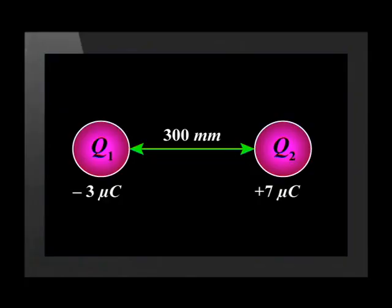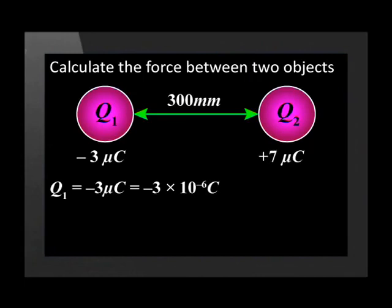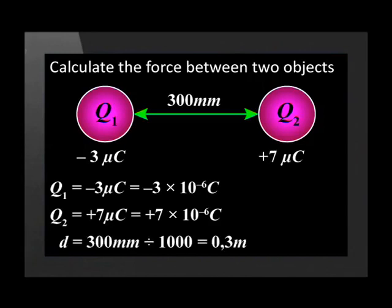Let us try a question involving a calculation based on the Coulomb's law equation. Calculate the force acting on the two charged objects, one with a charge of minus 3 microcoulombs and the other with a charge of positive 7 microcoulombs, positioned 300 millimeters apart. Q1 and Q2 have opposite charges, so each charge exerts a force of attraction on the other. Q1 is negative 3 microcoulombs, which converts to negative 3 times 10 to the minus 6 Coulombs. Q2 converts to positive 7 times 10 to the minus 6 Coulombs. The distance D is 300 millimeters, which converts to 0.3 meters.